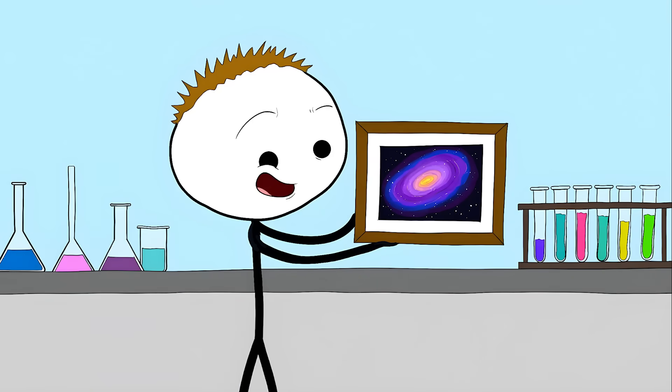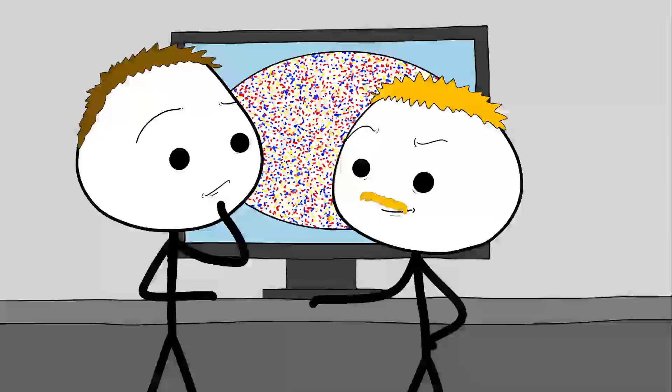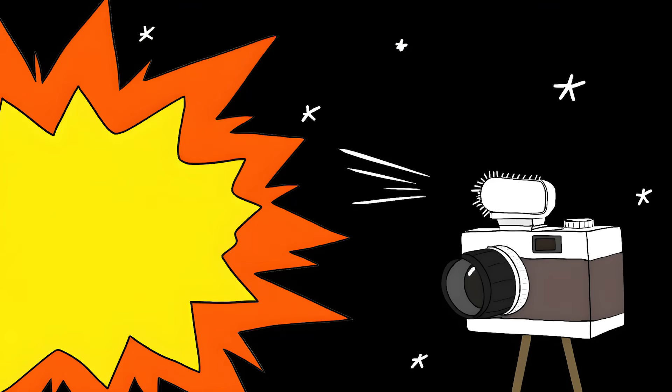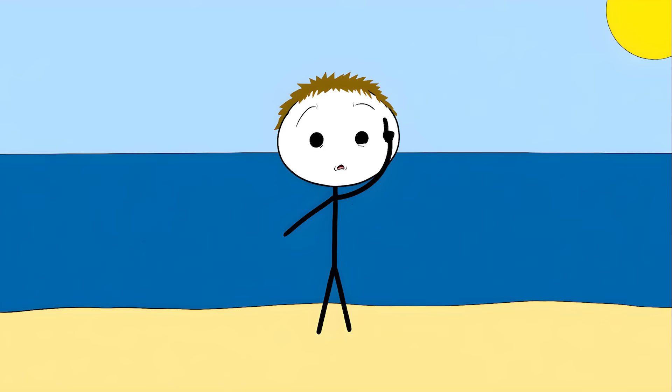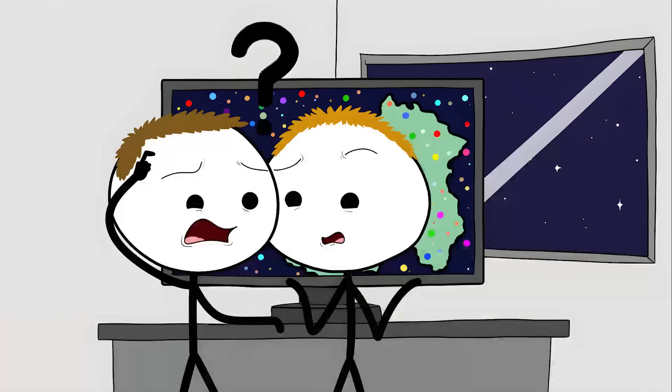Number three: the axis of evil. Imagine looking at a photo of the entire universe as a baby. That's basically what scientists did when they looked at something called the cosmic microwave background radiation. This radiation is like a baby picture of our universe taken just 380,000 years after the Big Bang. According to our best physics theories, this baby picture should look pretty much the same everywhere, kind of like how if you zoom out far enough, the ocean looks flat and uniform.